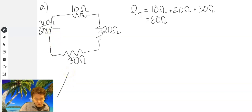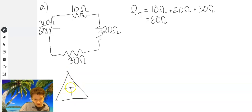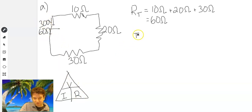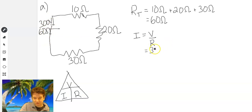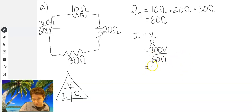If you remember Ohm's law, I'll draw you the triangle down here. Ohm's law looks like this: voltage equals current multiplied by resistance. But in this case, we know voltage and what we're looking for is current. So rearranging Ohm's law, we get current equal to voltage divided by resistance. For our total voltage we have 300, divided by 60 ohms, and that's going to give us five amps.